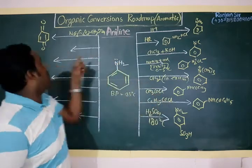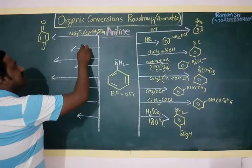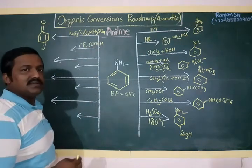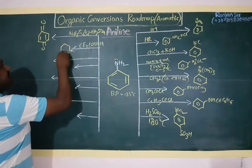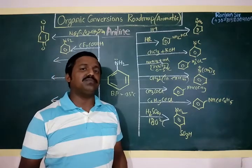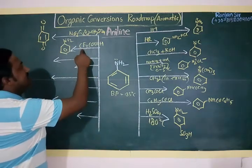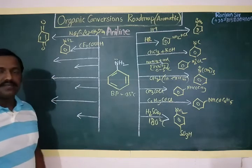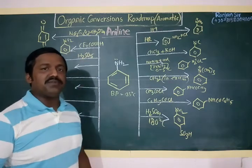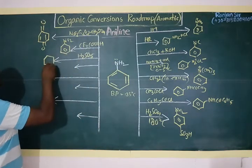Aniline can also be oxidized to para-benzoquinone. It can also be oxidized using trifluoroacetic acid (CF3COOH), and the product is nitrobenzene — that is a very important reaction. If you want to convert aniline to nitrobenzene in a single step, the reaction is with CF3COOH. Aniline also oxidizes in the presence of H2SO5 — peroxymonosulfuric acid, also called Caro's acid — to give nitrosobenzene (–NO).